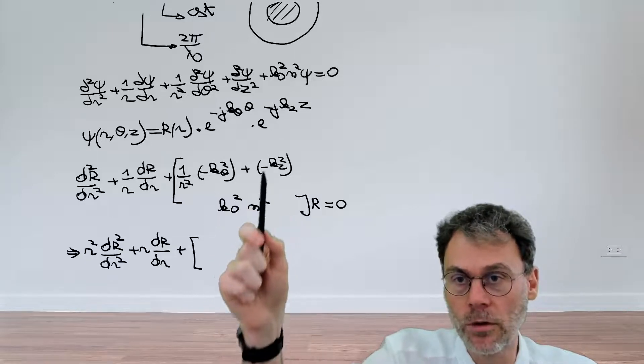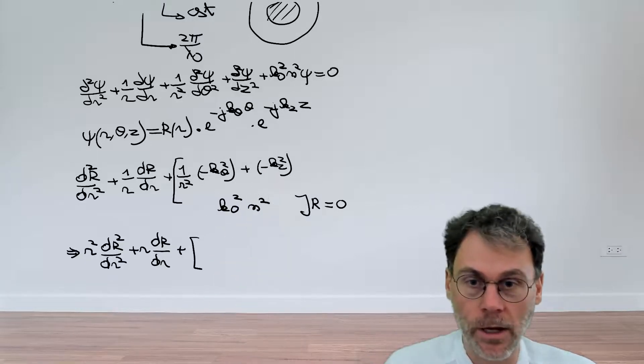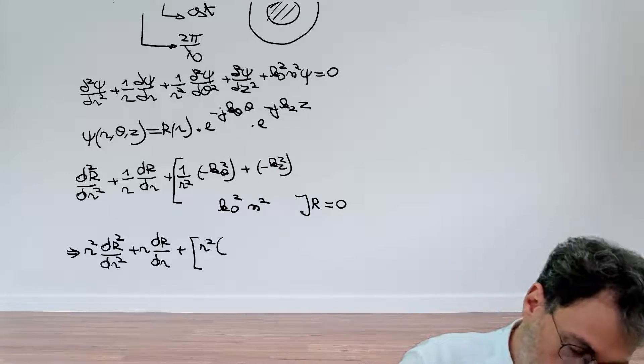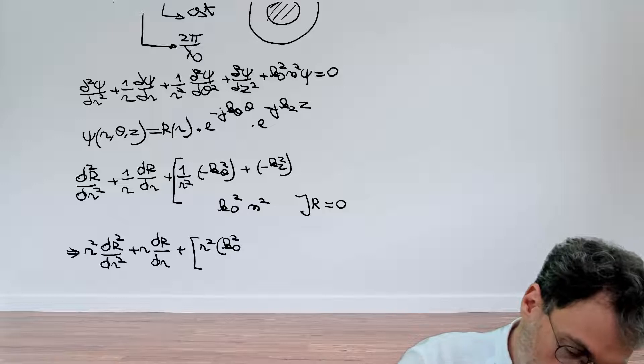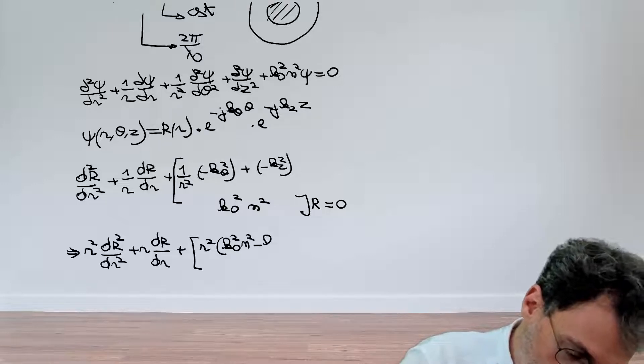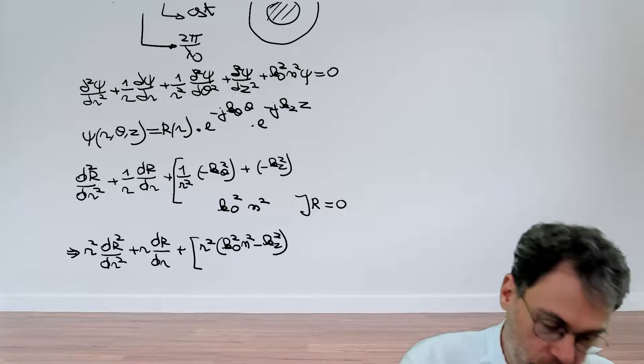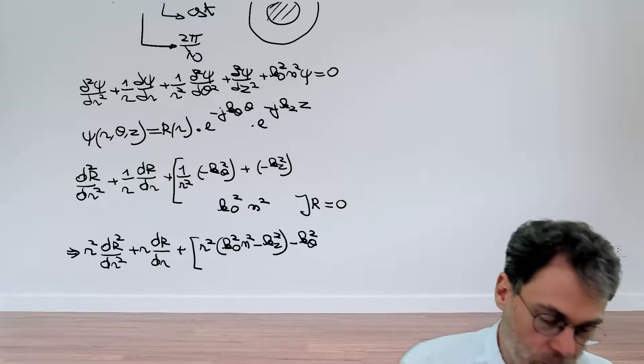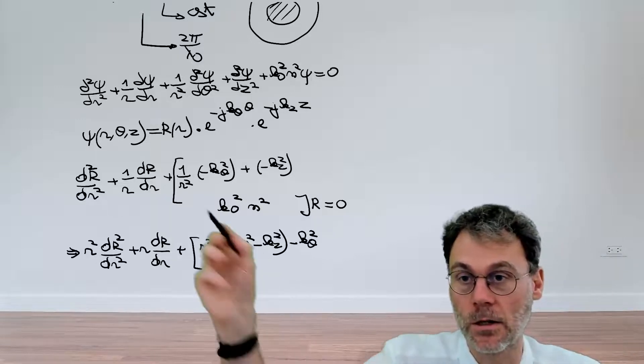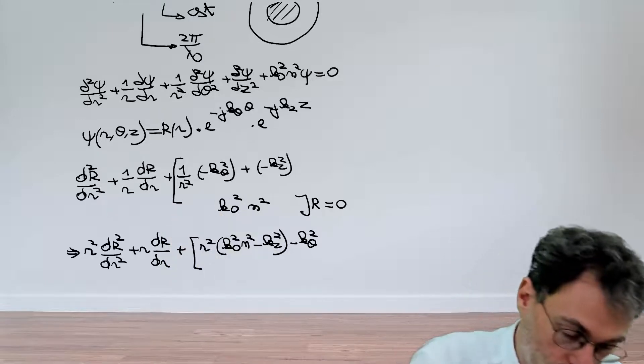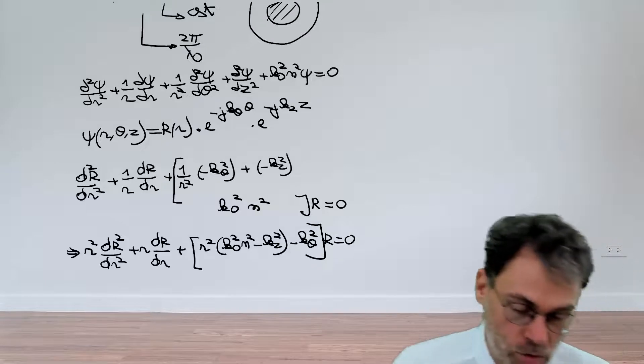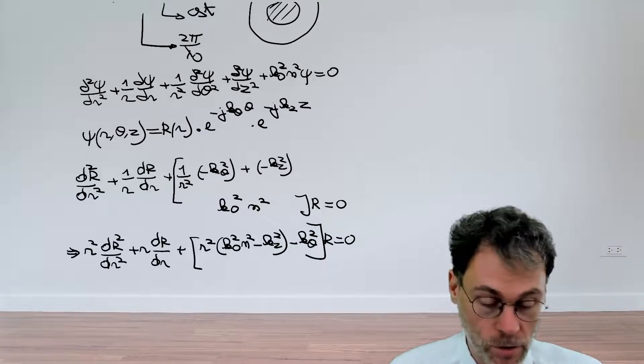Let's make this slightly more pleasing to the eye and multiply everything by r² so that we get rid of this ugly denominator. So this gives us r² d²r/dr² plus r dr/dr. And then finally, we have this thing over here. Let's first group these two things together and multiply them by r². This is going to give us r² (k₀²n² - kz²). And then this is the remaining term: minus kθ² multiplied by r equal to zero.